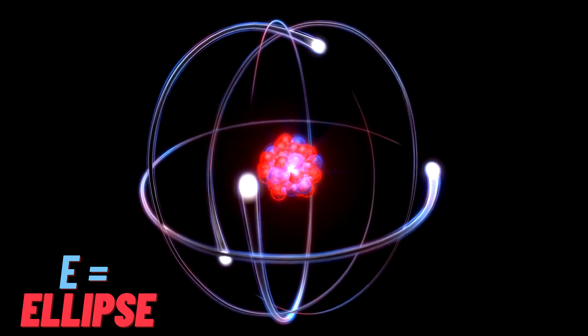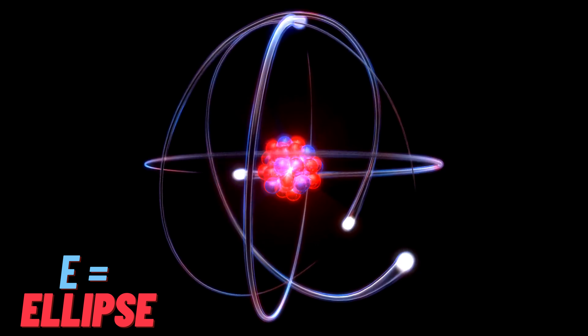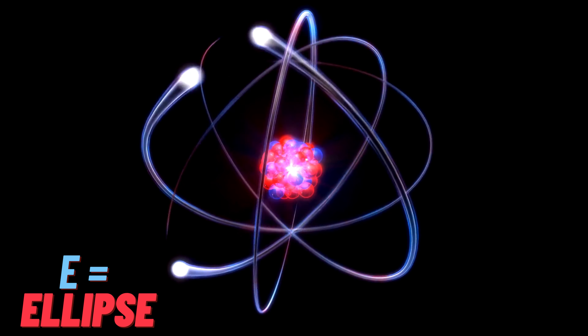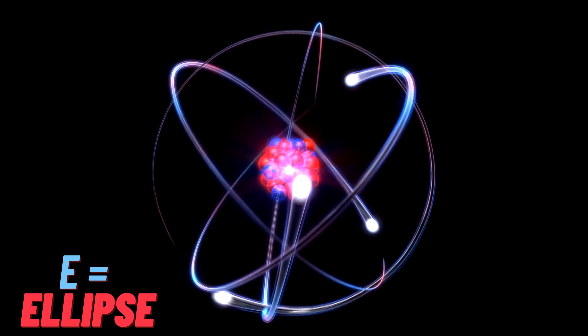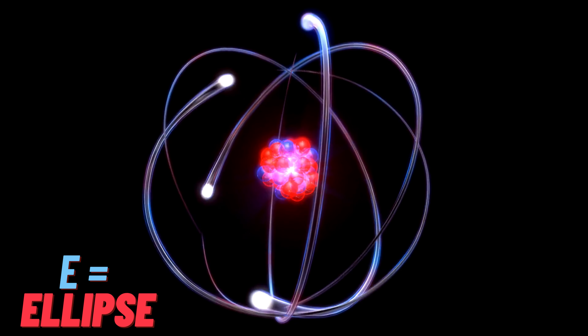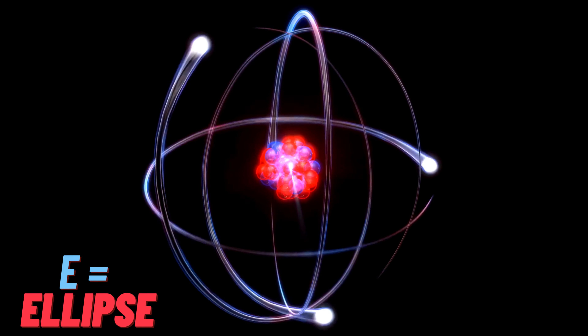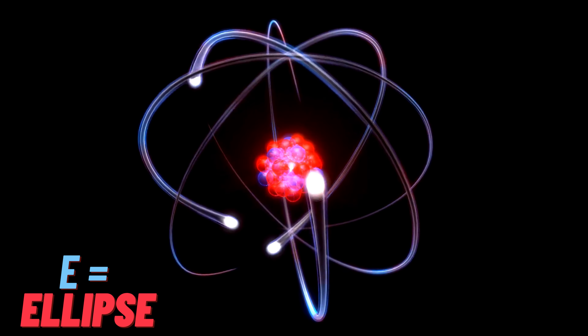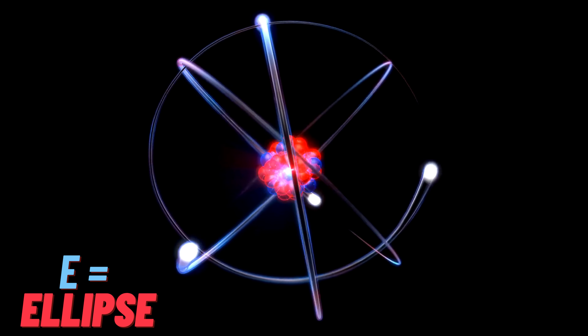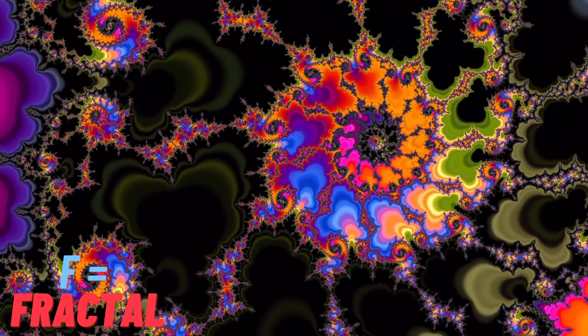E is for Ellipse, a stretched-out circle's embrace. Two focal points create its unique space. Ovals and orbits, curves and grace, Ellipse's path is a celestial chase.